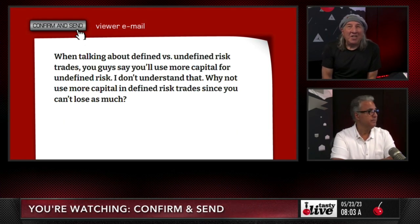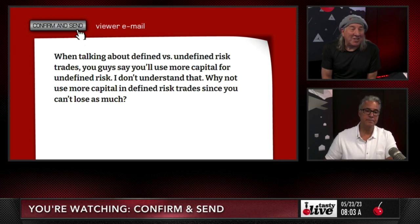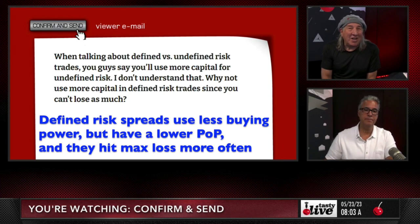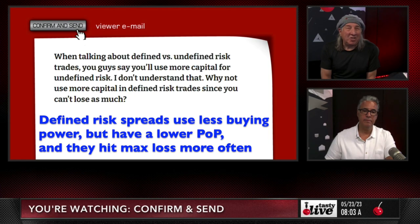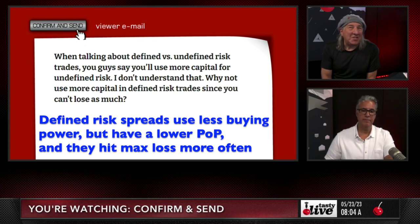With defined risk trades, if you're going to use more capital for defined risk trades versus undefined risk trades, you're going to have too many contracts on, and you're going to have a lower probability of profit. So with defined risk trades, it's a lower probability of profit, meaning you're going to put more capital into lower probability of profit trades. That doesn't make as much sense to us.